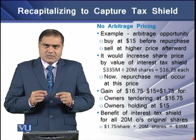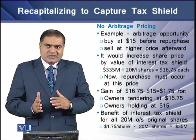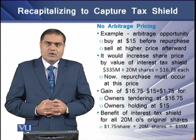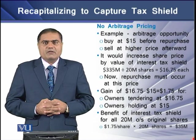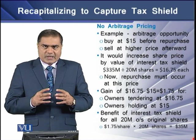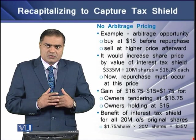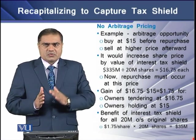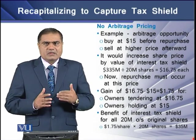To determine the total benefit, we multiply the 20 million shares by the differential gain of $1.75 per share, giving a total gain of $35 million. This total gain of $35 million is distributed to both the shareholders who are selling their shares back to the firm and those who are holding their shares.